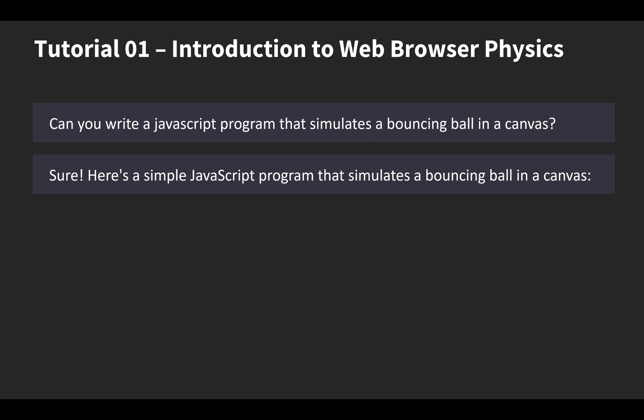Here you see my first demo. To check whether ChatGPT can do this, I asked it, can you write a JavaScript program that simulates a bouncing ball in a canvas? Sure. Here's a simple JavaScript program that simulates a bouncing ball in a canvas. Amazing. It passes the first test.